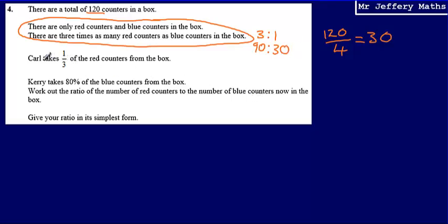We're then told that Carl takes one third of the red counters. Now if there are 90 reds, one third of 90 is going to be 30.